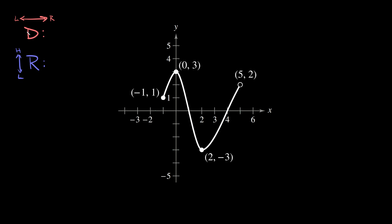First, let's find the domain. The domain tells us how far the graph goes from side to side. The point furthest to the left is at negative 1 comma 1, and you can see that we have a closed circle there. The point furthest to the right is at 5, 2, which has an open circle.